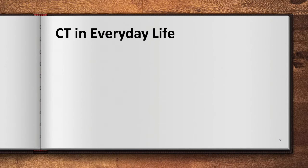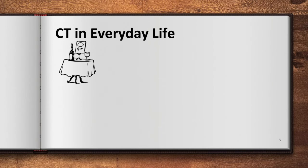Let's look at the cornerstones of computational thinking in everyday situations. First up is decomposition. Imagine planning a dinner party for some friends. We can break this idea down into smaller components such as selecting a menu, the guest list, the time and date, etc. These smaller parts added together equal the dinner party and are interrelated but can be accomplished separately.